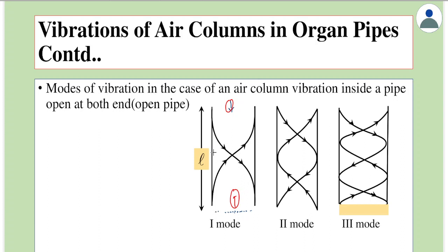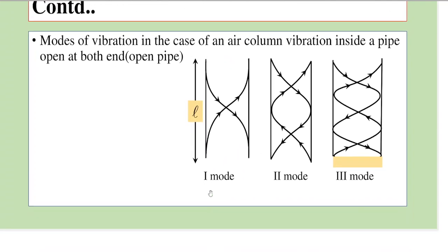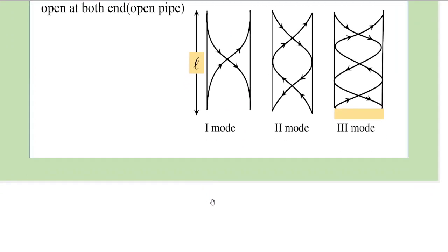Since both ends are open, both ends should be anti-nodes. Let us find out what are the possible modes of vibrations here. The simplest case is a condition where one end is an anti-node and the other end is also an anti-node. The most simplest case would be: between two anti-nodes, we have an anti-node, node, and then anti-node.